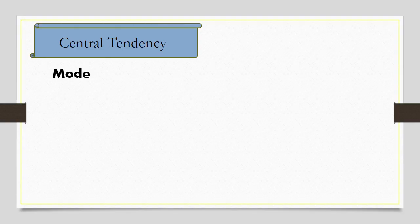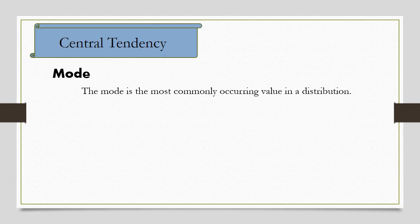The last measure of central tendency is the mode. The mode is the most commonly occurring value in a distribution.